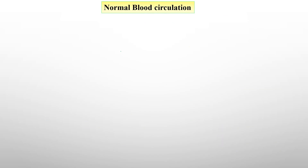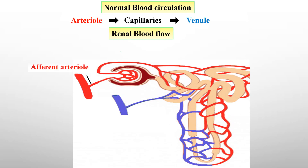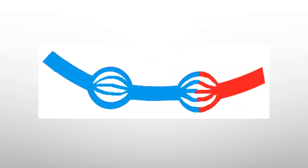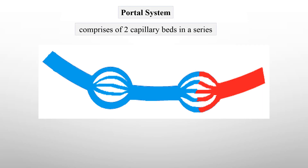In normal blood circulation, an arteriole branches to form capillaries and capillaries unite to give rise to a venule. But in the renal blood flow, the afferent arteriole gives rise to the glomerulus capillary bed, which doesn't give rise to a venule. Instead, the glomerulus gives rise to another arteriole, the efferent arteriole, which again divides to form the peritubular capillaries. Thus in the renal blood flow we have two capillary networks. This is what we call the portal system — a portal system always has two capillary beds in series, joined together by a portal vessel.